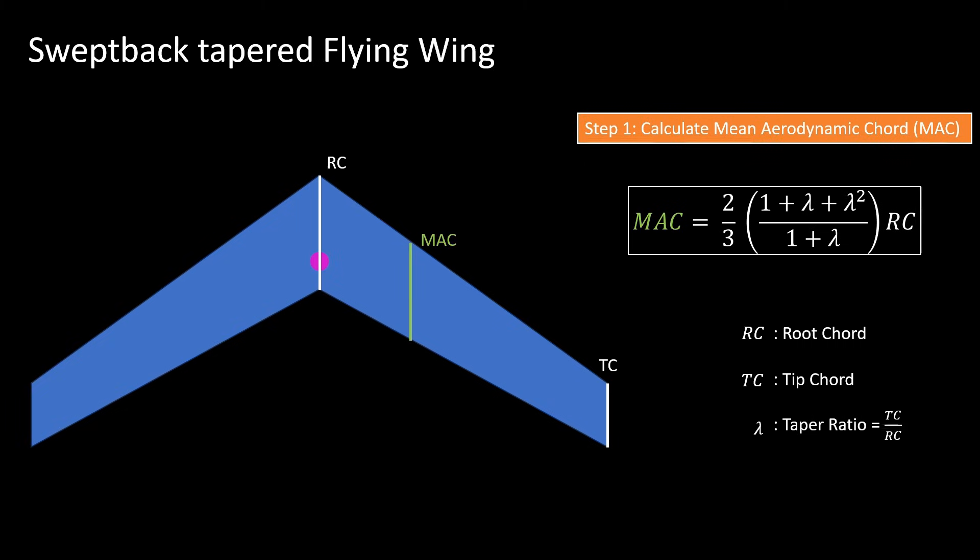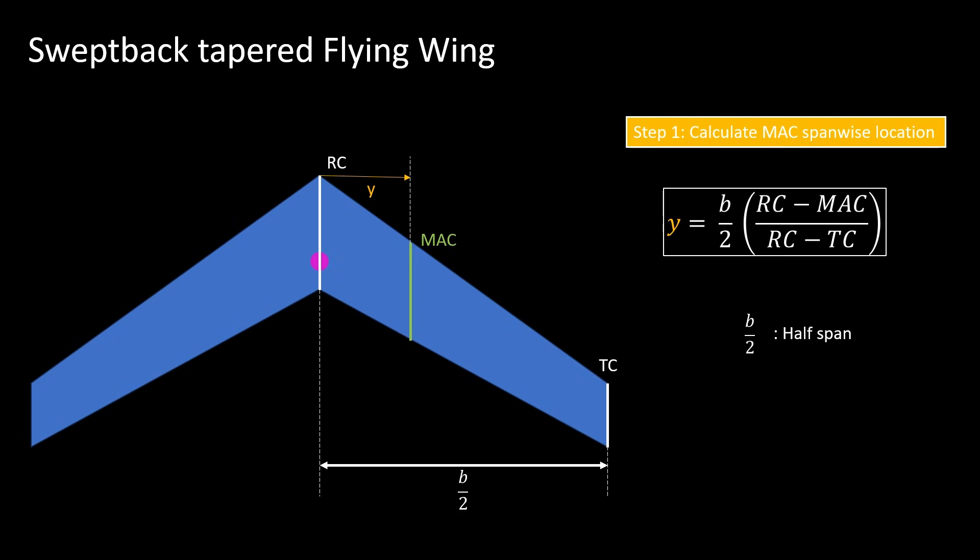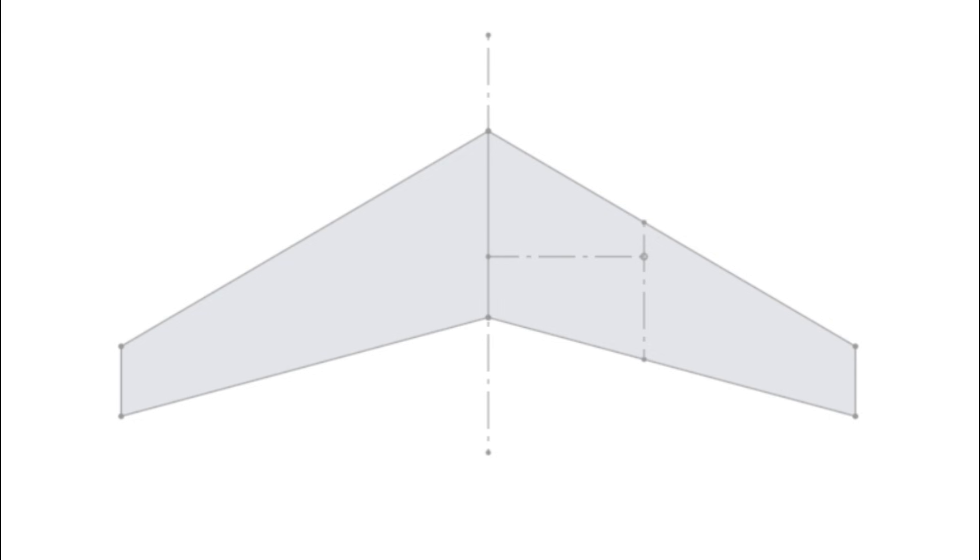The spanwise location of the mean aerodynamic cord can also be found using the formula shown. The cord line drawn at this location will be equal to the mean aerodynamic cord. You can sketch your flying wing design on paper or using a CAD software and mark the mean aerodynamic cord. It is much easier to make changes later in a CAD software.